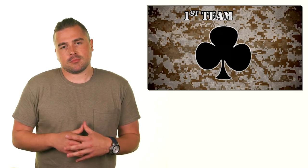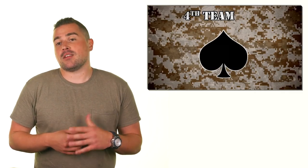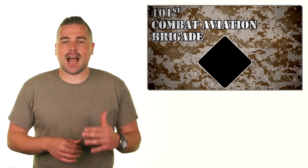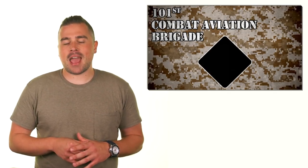The regiments are more commonly known as brigade combat teams, and the symbols are each given as such. Clubs to the first team, hearts to the second, spades to the now deactivated fourth, and diamonds to the 101st Combat Aviation Brigade.